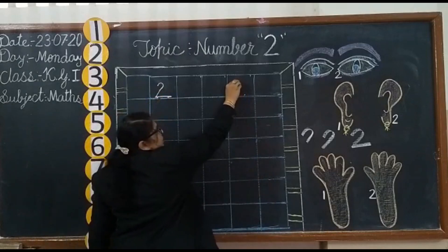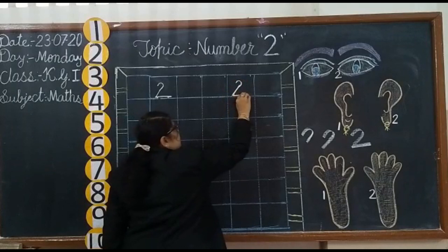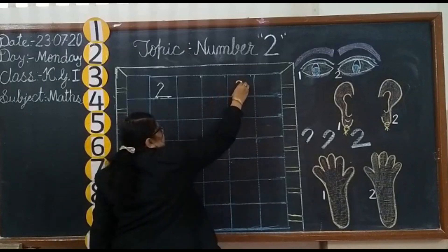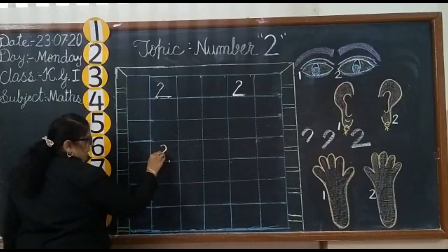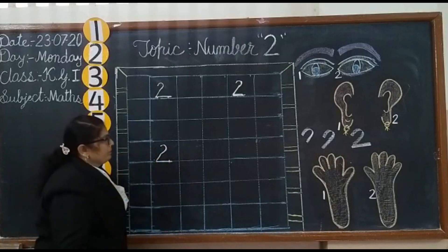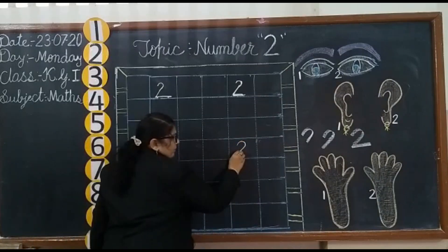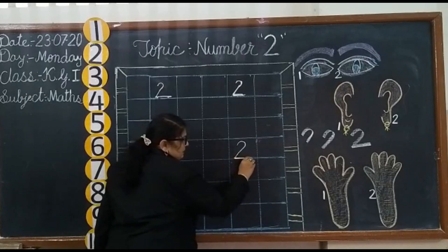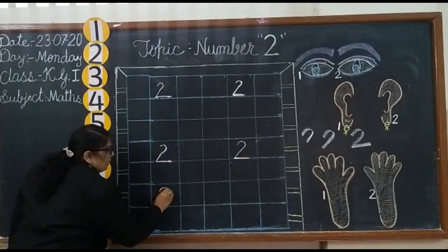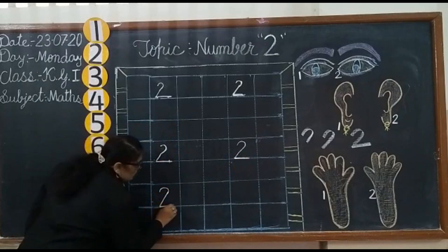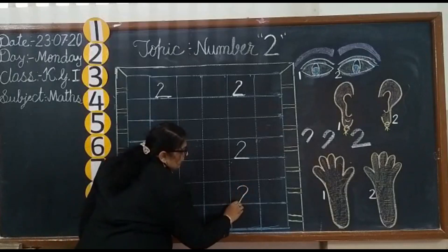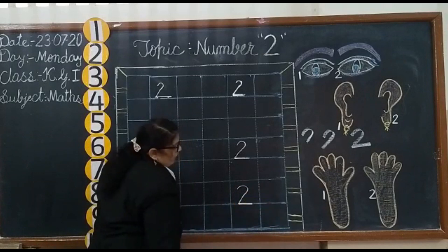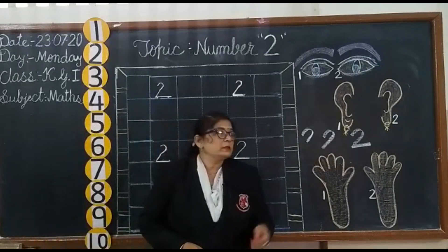Curve, come down slanting line and slipping line — 2. Curve, come down slanting line and slipping line — 2. Curve, come down slanting line and add a slipping line — 2. This is your number 2.